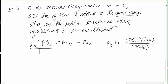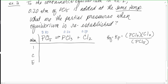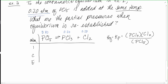The ICE table is in atmospheres. Originally from the last problem, PCl5 was at 0.8, PCl3 was 0.2, and Cl2 was 0.2. We're adding an additional 1.2 atmospheres of PCl5, so the initial PCl5 is now 1.0 atmospheres, while PCl3 and Cl2 still start at 0.2 atmospheres each.